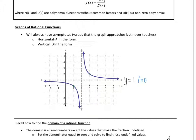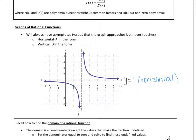Let's write down horizontal asymptote here. There is also another asymptote going vertically. See how this graph is approaching the x value of 2 right here? It's approaching it, but it'll never touch it. This value is going up approaching 2 again, but it'll never touch it. These equations are in the form x equals, so this is x equals 2, which is a vertical asymptote.